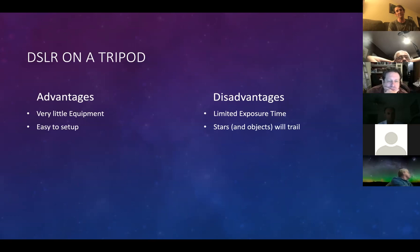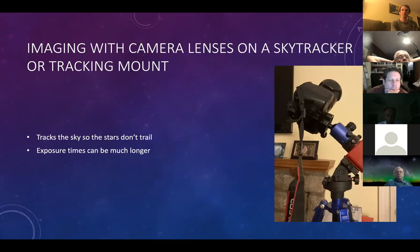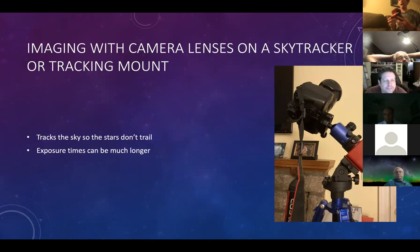There are some advantages to a DSLR and tripod: very little equipment, easy to set up and take down. A disadvantage is limited exposure time — if you take a five-minute exposure, it's going to be horribly trailed and just won't look very good. That leads you to the thought that maybe you want a sky tracker that will track the sky and allow you to take 10-minute exposures or longer.